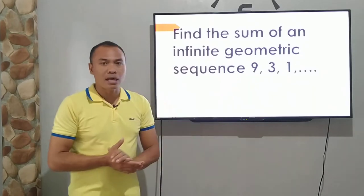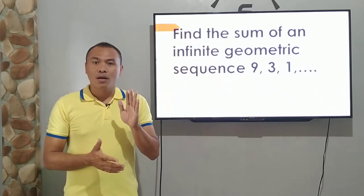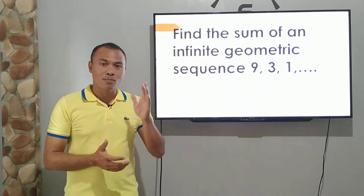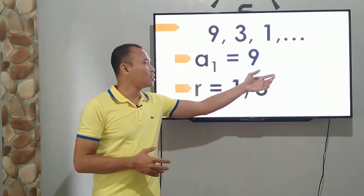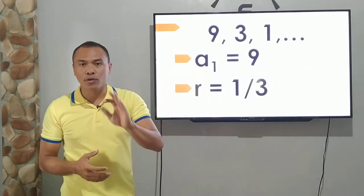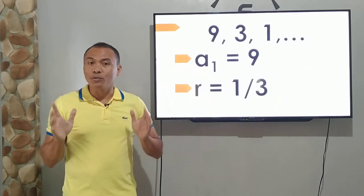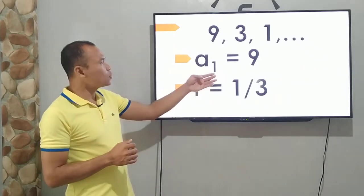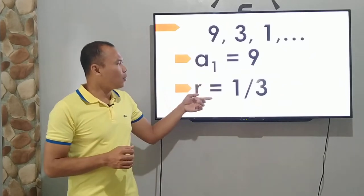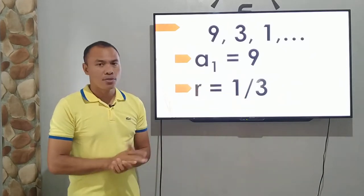So let's try. 3 divided by 9 is 1 third. Or the lowest term of 3 over 9 is 1 third. Ito na siya, 1 third. At ang 1 third ay pasok doon sa condition natin. So the first term is 9 and r is 1 third.